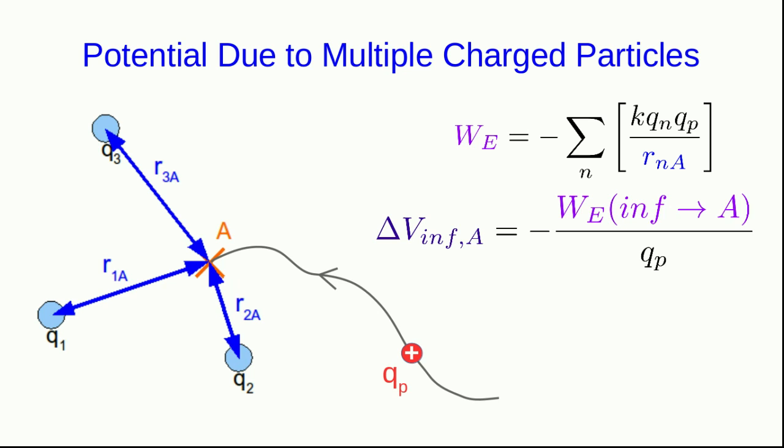And we know that the change in potential is the negative of the electrostatic work over the probe particle. If we define the potential to have been zero at r equals infinity, then this just gives us the final V, which is the potential at A.